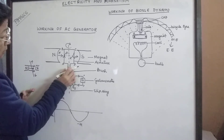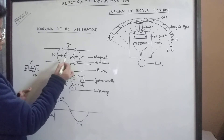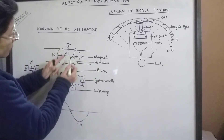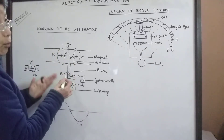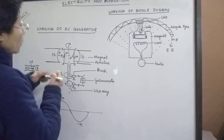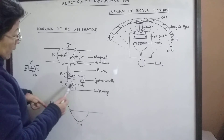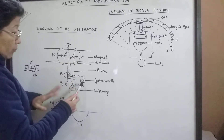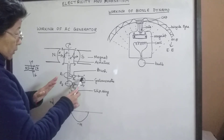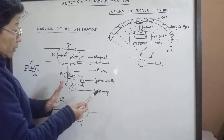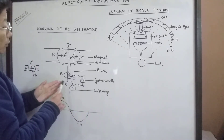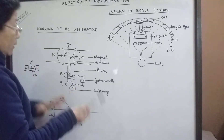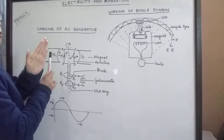In order to induce current in the circuit, this armature should be made to move upward and downward — there should be movement in the armature. To achieve this, the armature is made to rotate in the magnetic field. While rotating it produces current, and that current is alternating current. Alternating current means that during the first half of rotation the current flows in one direction, and in the next half it flows in the opposite direction. That is why it is called an alternating current producing device.